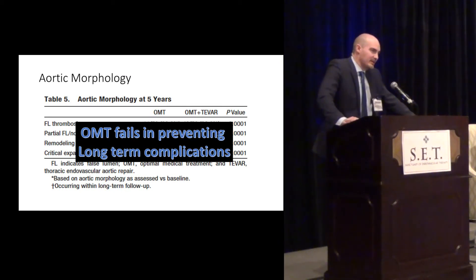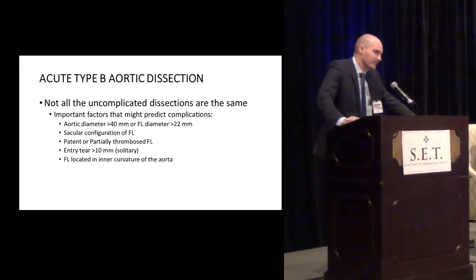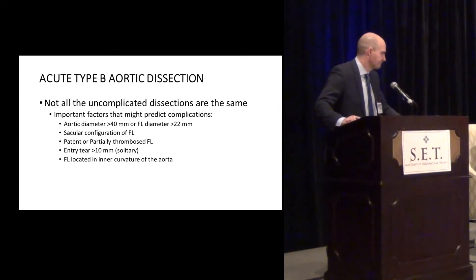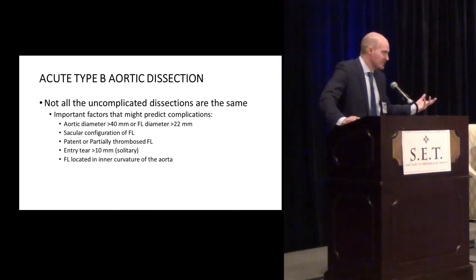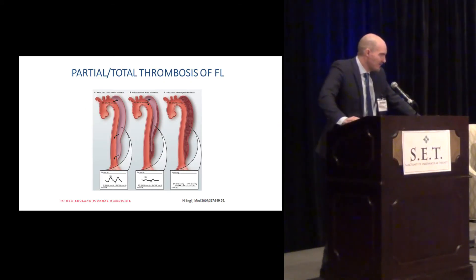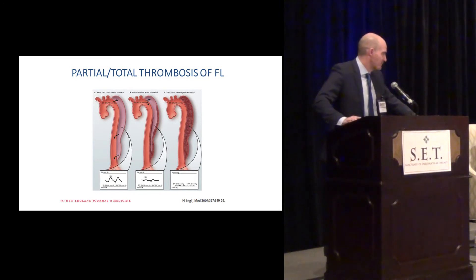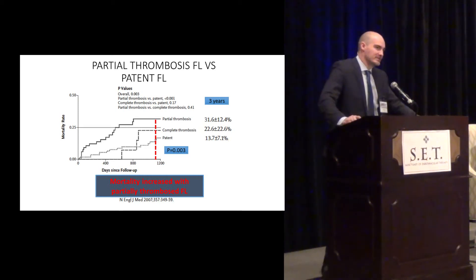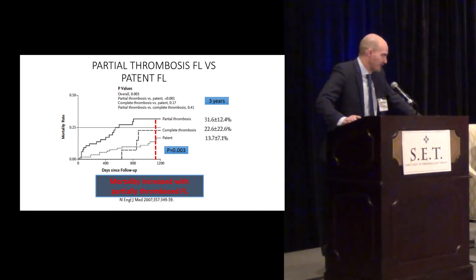One thing I've learned is that not every single aortic dissection is the same — they're all different. There have been reports of different factors that might predict complications. When you have partial thrombosis versus no thrombosis at all in the false lumen, if you have partial thrombosis you have some coverage of some re-entry points, so your diastolic pressure is going to be much higher in those patients than in ones with no thrombosis or full thrombosis. That's going to lead to an increase in the diameter of the aneurysm and may affect mortality in patients with partial thrombosis.